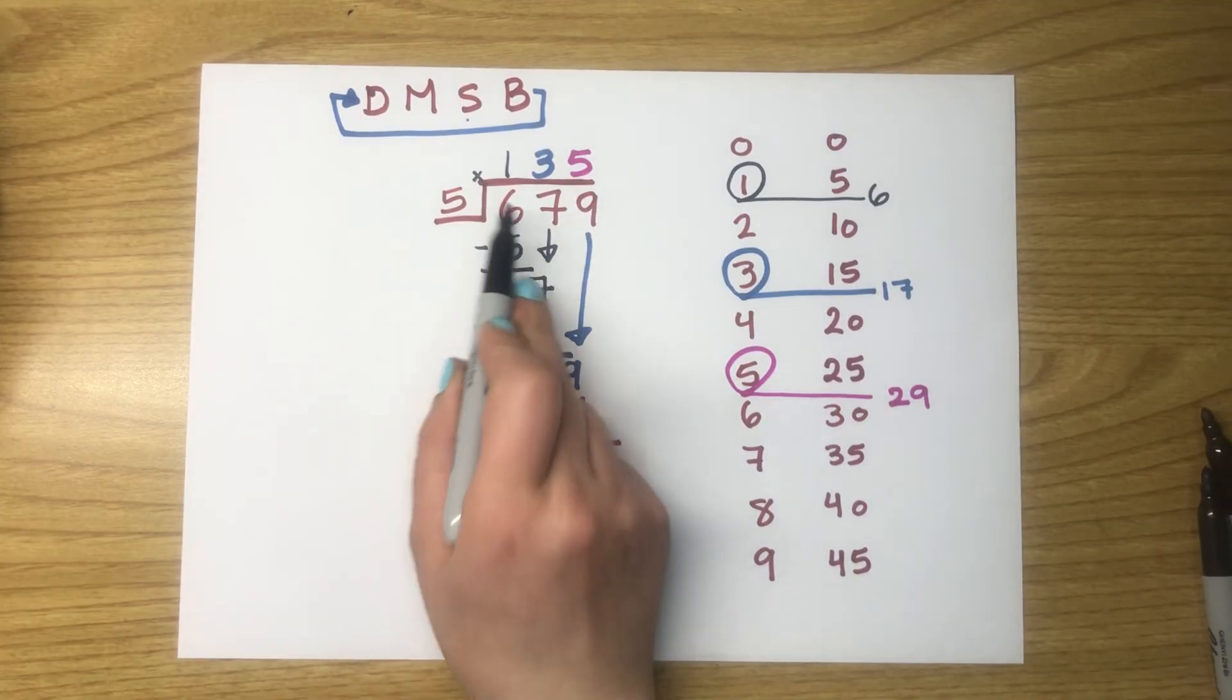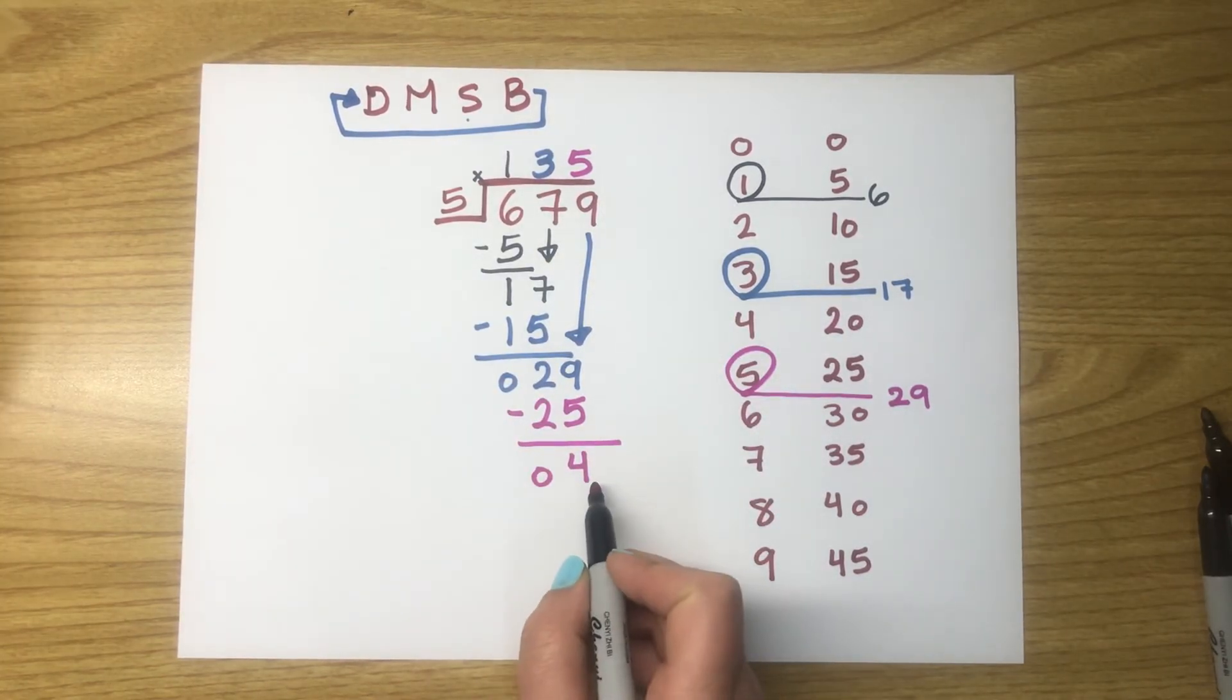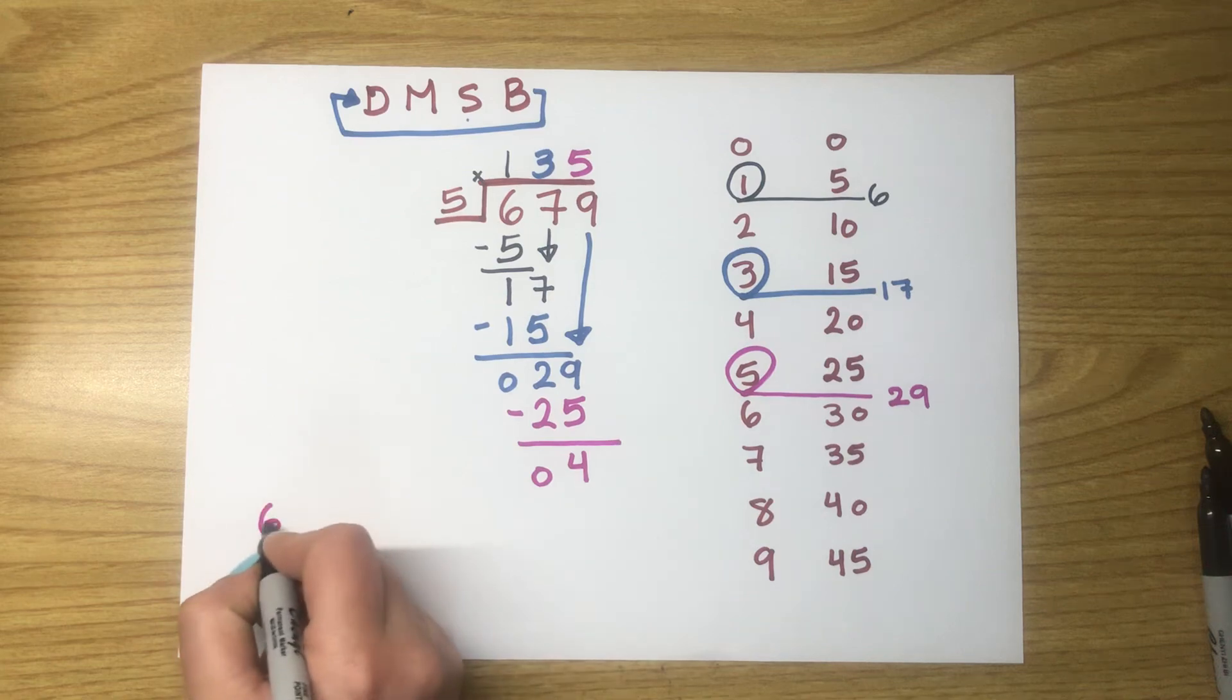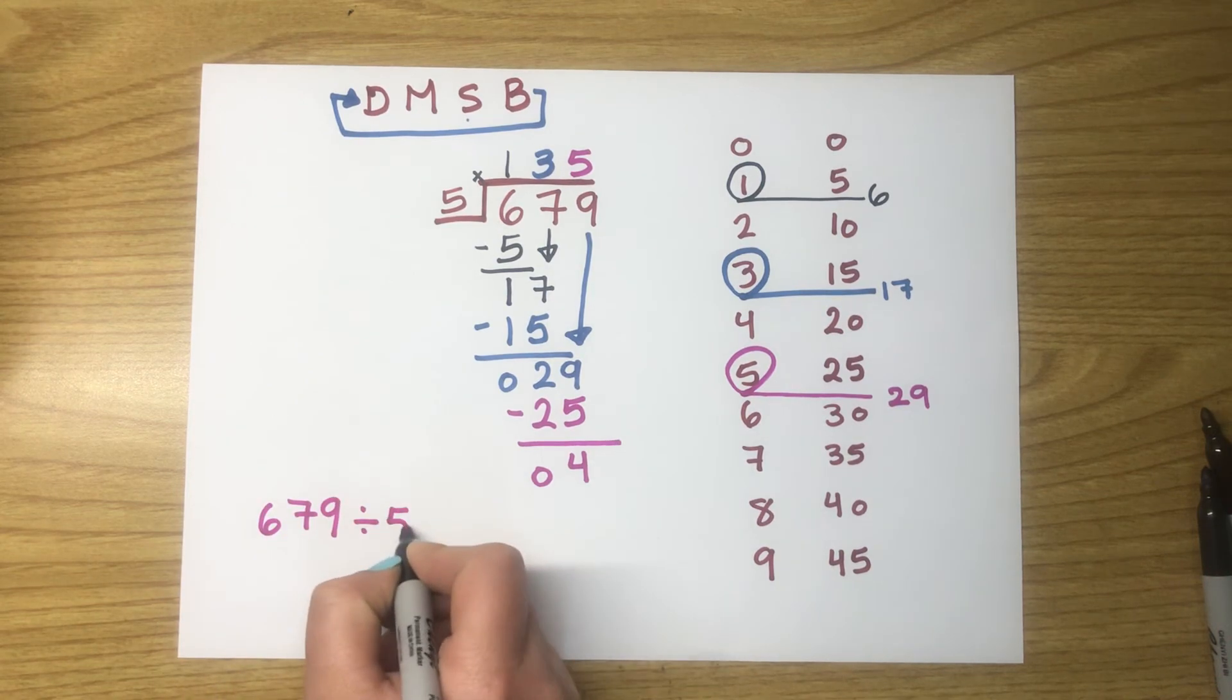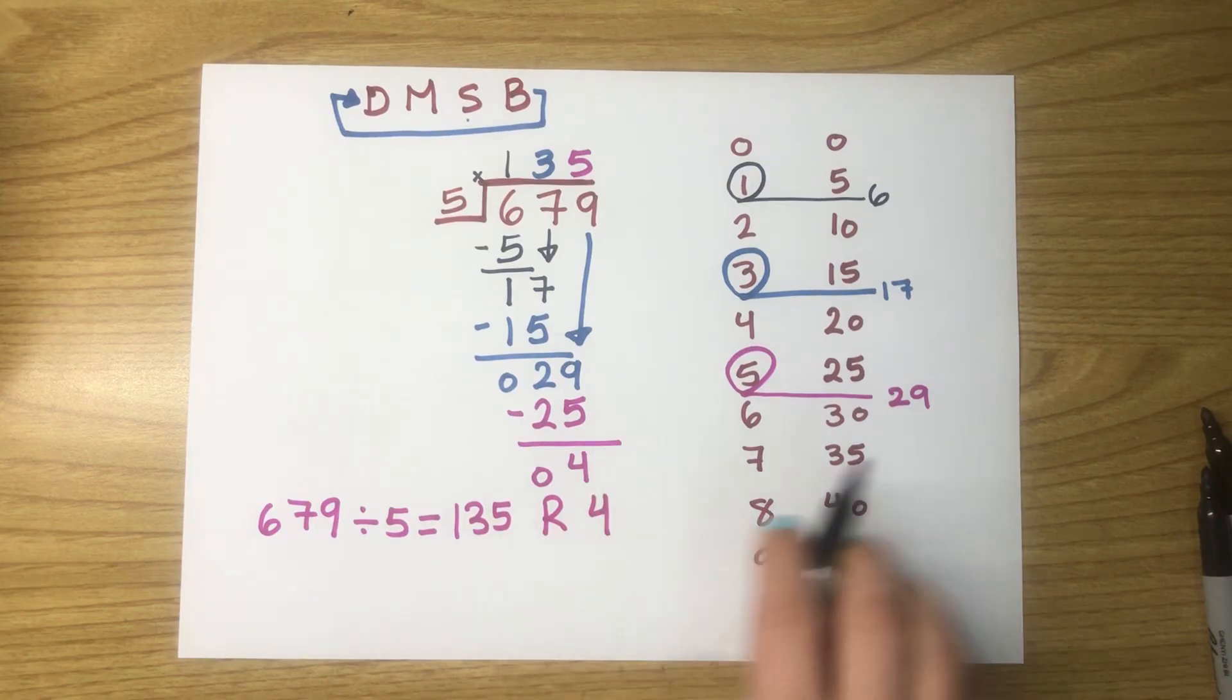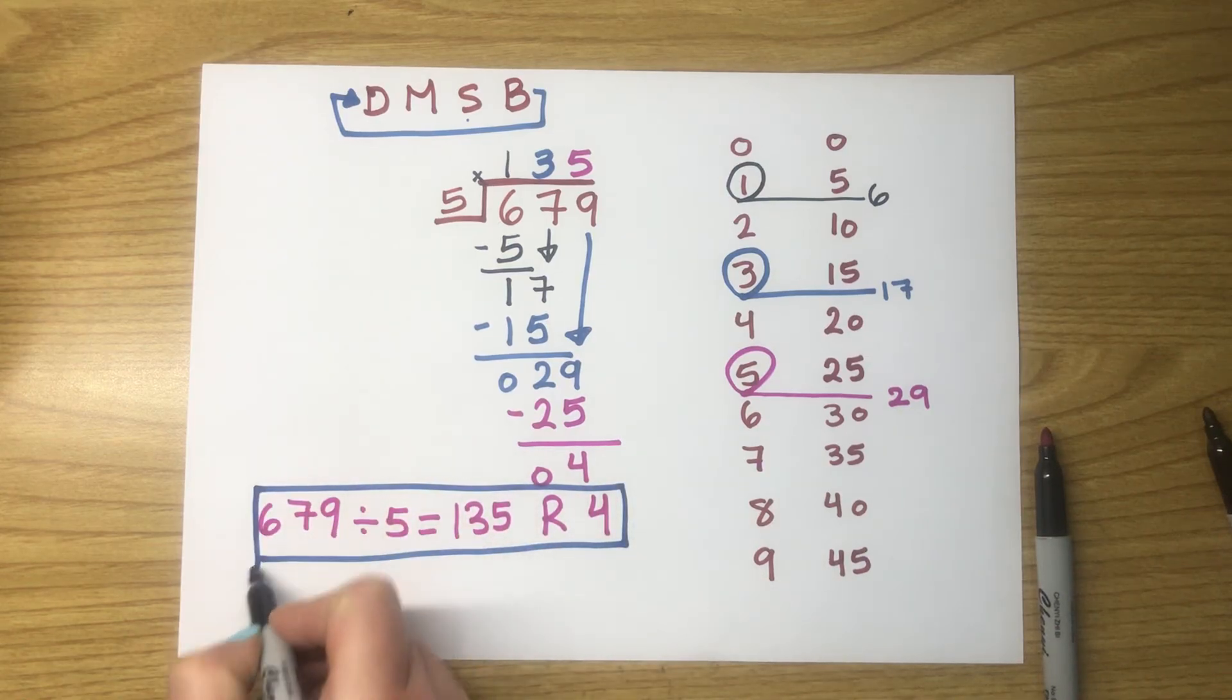679 is called the dividend. The 5 is called the divisor. 135 is called the quotient. And the remainder is 4. We can write it in another way after we are done with this whole process as 679 divided by 5. The answer is 135. And the remainder is 4. And that's how we do long division.